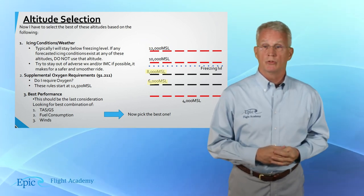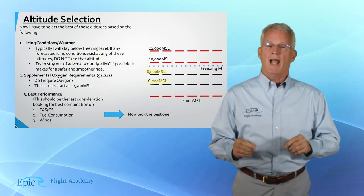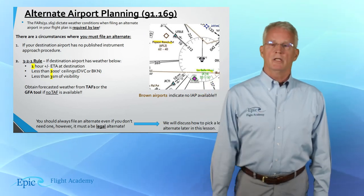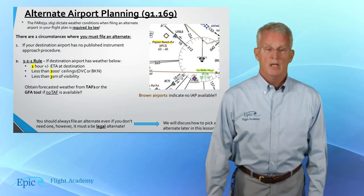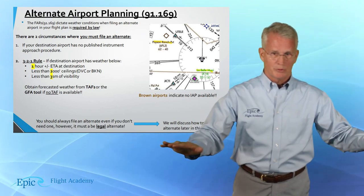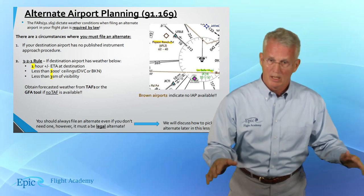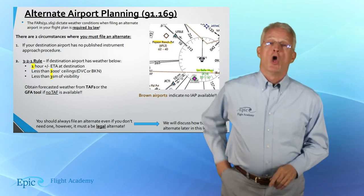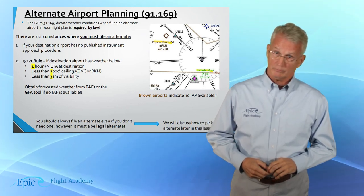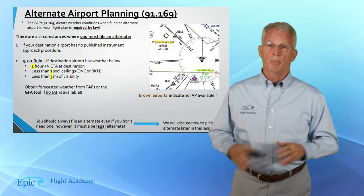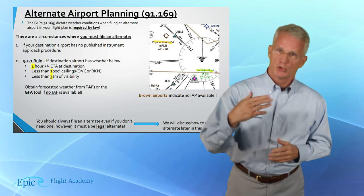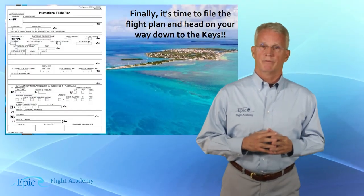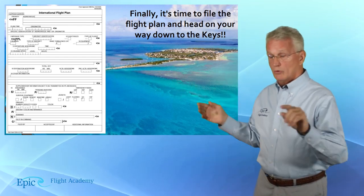At this point, we need to ensure that we have planned for an alternate airport, if one is needed or required. Review the Epic instrument course video on alternates to remove any confusion about alternate airport planning. And lastly, before you depart, be sure to file an IFR flight plan — review the details of this with your CFII.